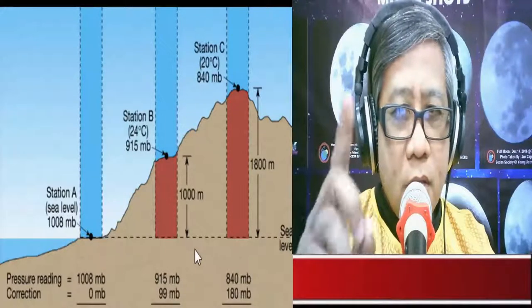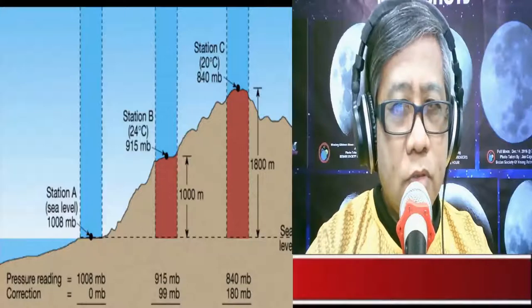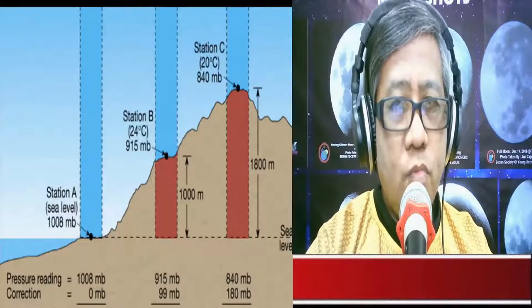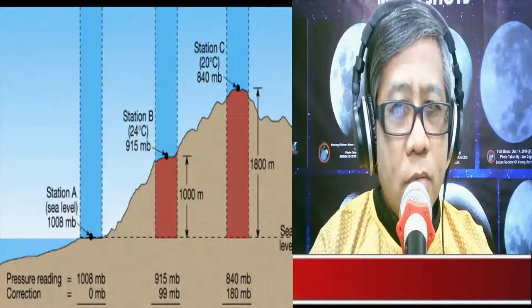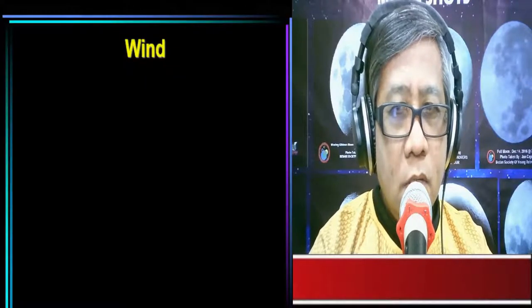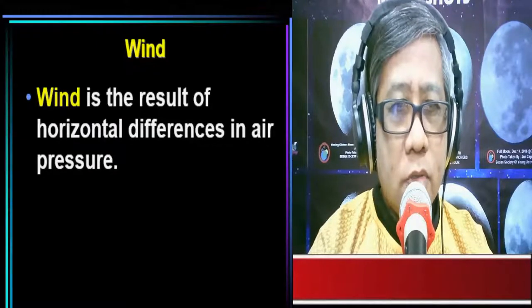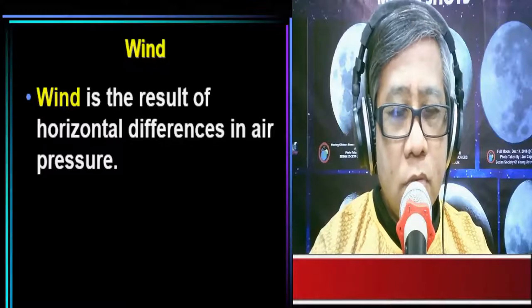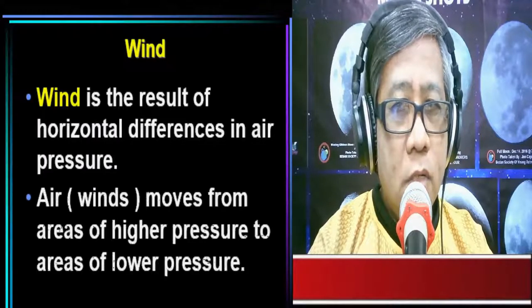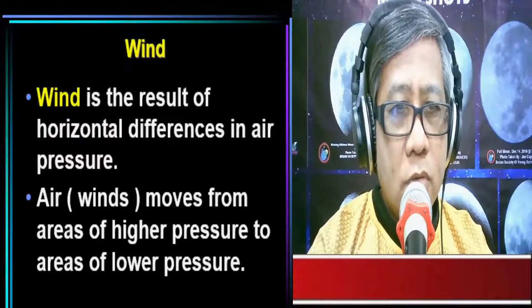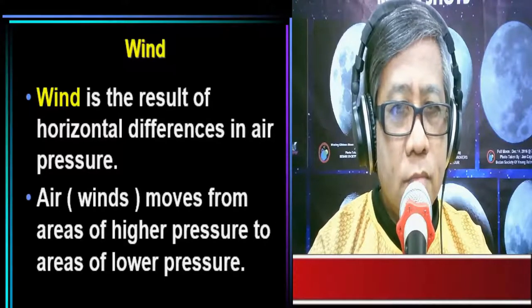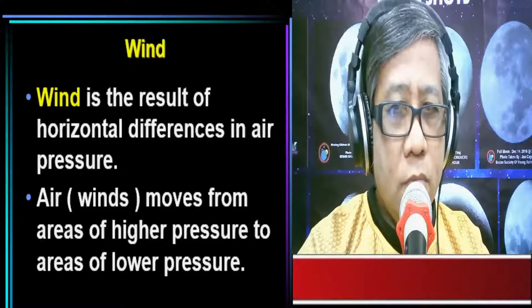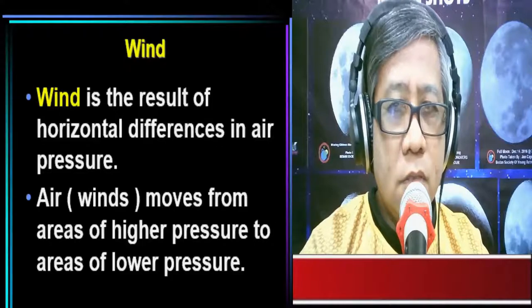In some places there is high pressure and in others low pressure. These differences in air pressure result in the movement of air, which we call wind. Wind is the result of horizontal differences in air pressure. Air or wind moves from regions of high pressure to regions of low pressure.